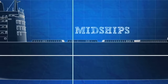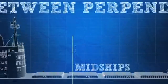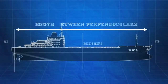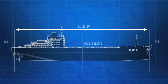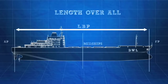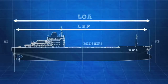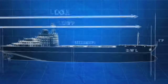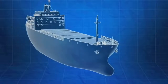Midships is the horizontal point halfway between the forward and aft perpendiculars. The length between perpendiculars, or LBP, is the total horizontal distance between the forward and aft perpendiculars. Length overall, or LOA, is the total length of a ship at its longest point. Note that this may be a little longer than the LBP, because a ship can extend slightly past the perpendiculars.